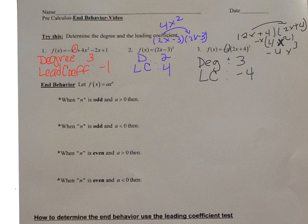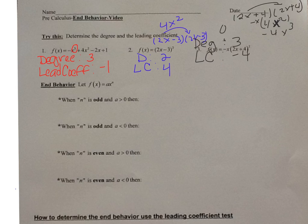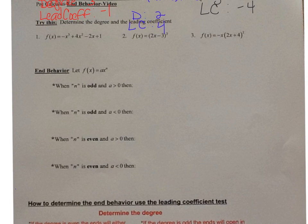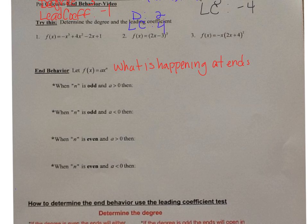Now let's talk about end behavior. End behavior is what's happening at the ends of the graph — what's happening on the left and right side of the graph.